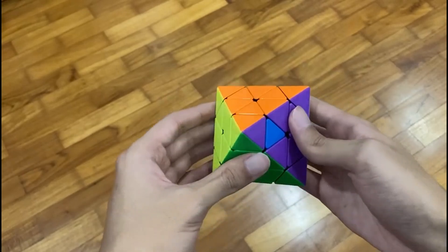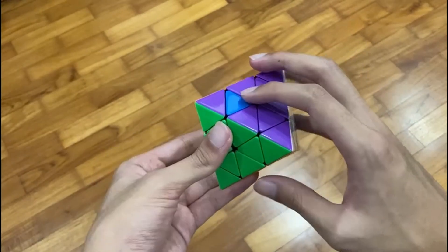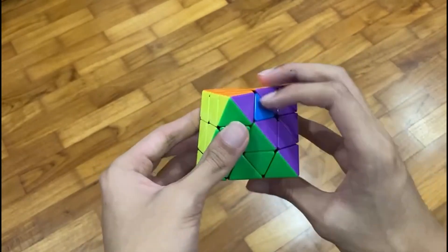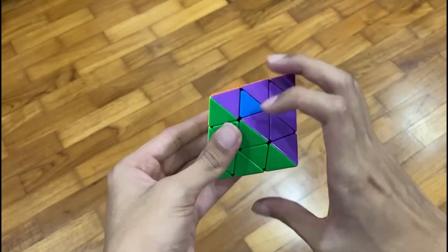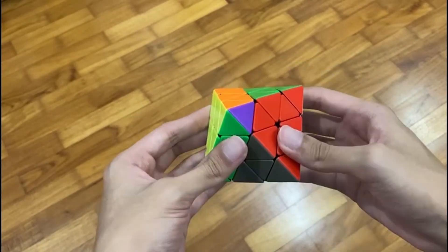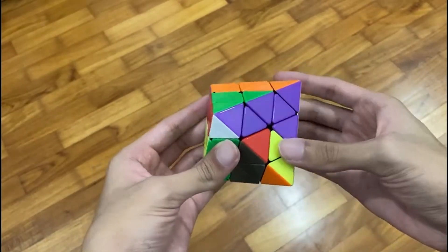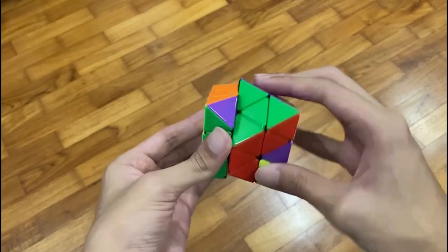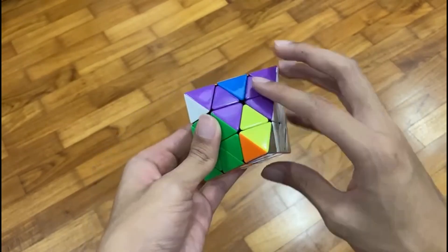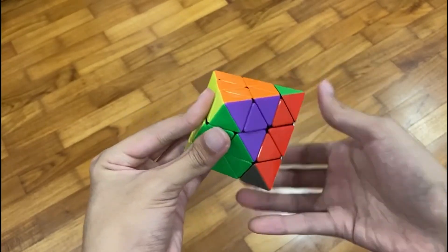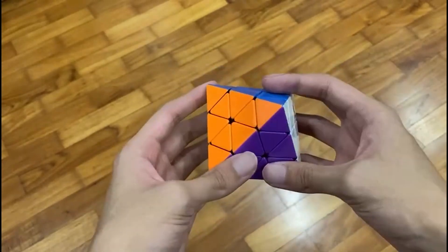And pretending like this is your R-wide, and this is your U-layer, you do the same thing. So it's R-wide, U, R-prime, U-prime, I'm doing M, U, R, U-prime, R-prime. And that solves your FTO.